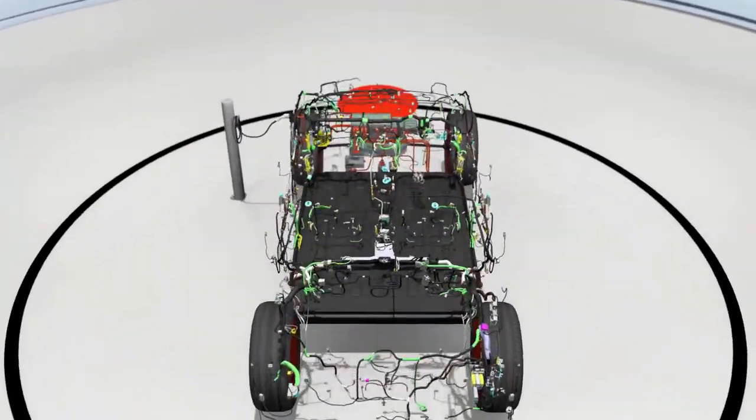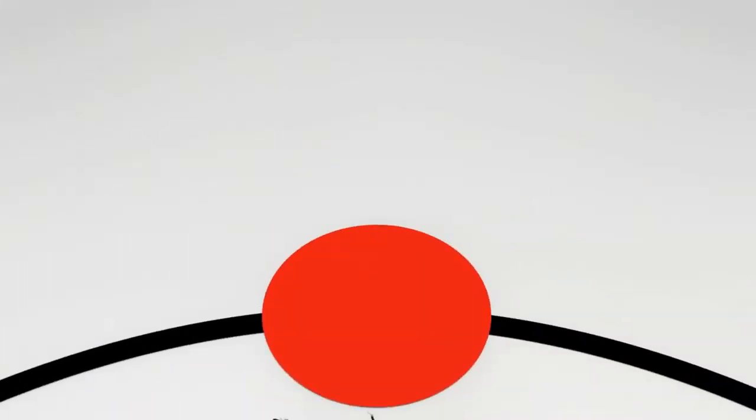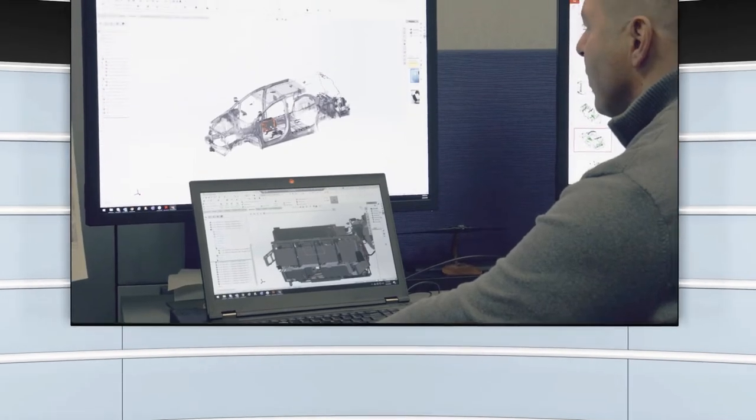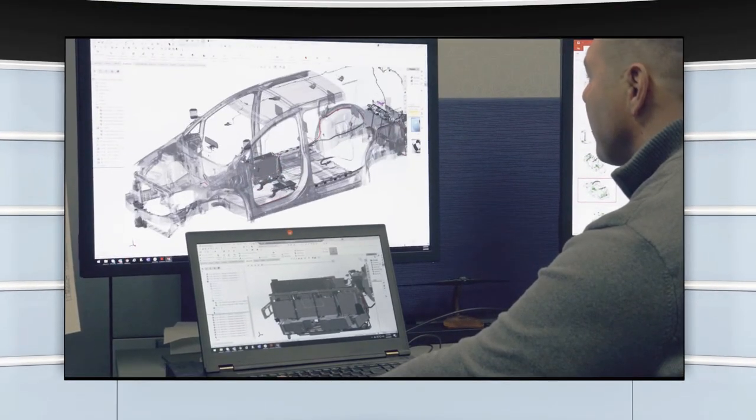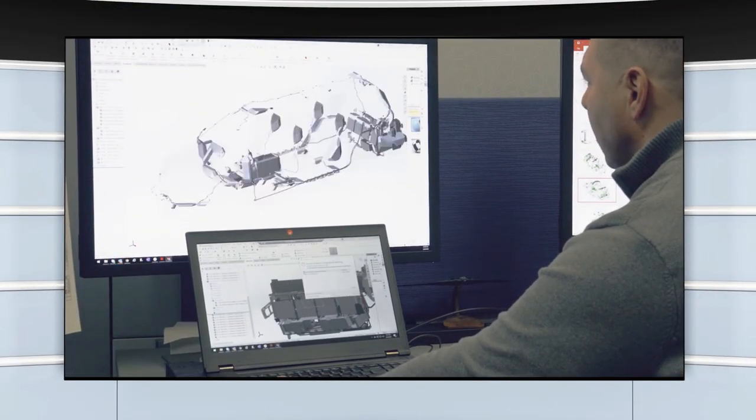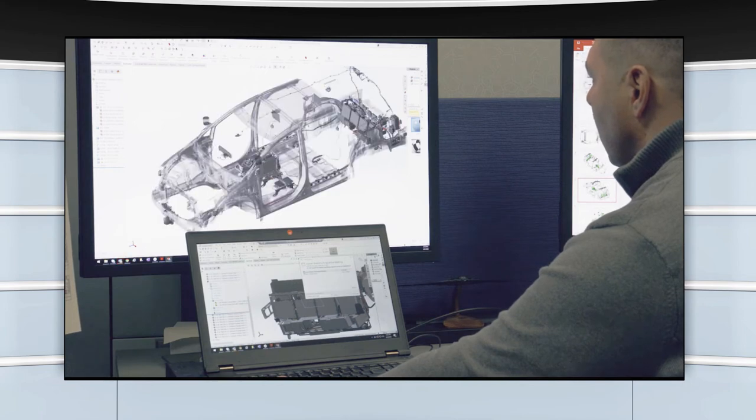An EV architecture can comprise anywhere from 1200 to 1800 individual low voltage connectors. To deal with this complexity, Aptiv's Velocity tool suite and system engineers provide virtual modeling to help OEMs optimize harness placement.